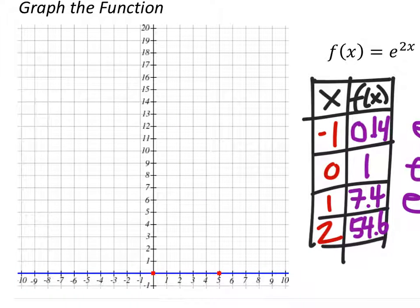But what this does now is that we have this table, it gives us an opportunity now to graph each of these ordered pairs. Now these are the only three ordered pairs that I can fit on this graph, and if we looked at where x is 2, 54 point 6 is far off of this graph.